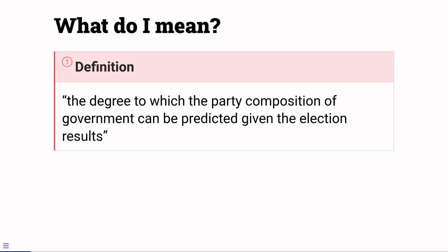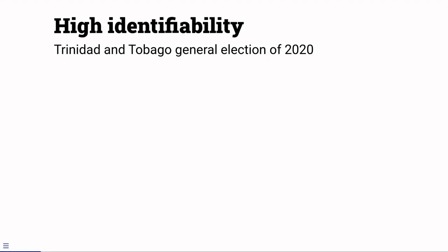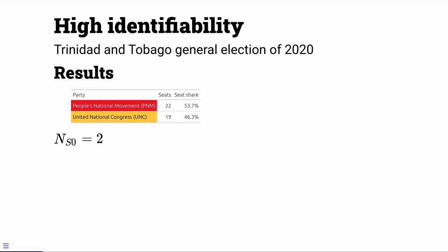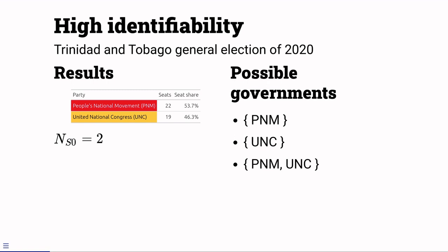Here's an example of high identifiability. In the 2020 elections in Trinidad and Tobago, two parties won seats and the People's National Movement won a majority of seats. In theory, there are three possible governments. A single-party government of the People's National Movement, a single-party government of the United National Congress and a grand coalition. But you don't need to be an expert in Trinidadian politics to predict that the People's National Movement will form a single-party government. It's a case of high identifiability.